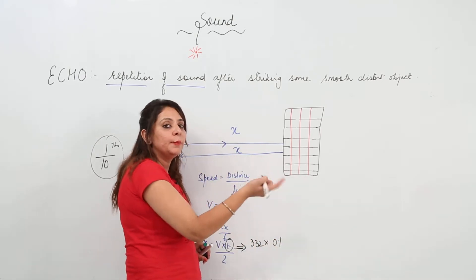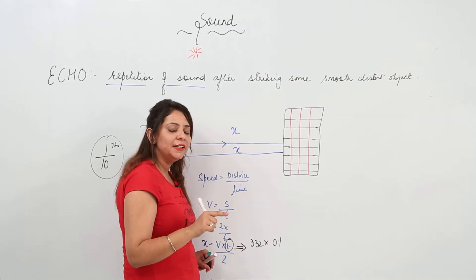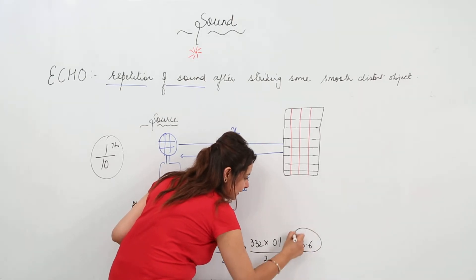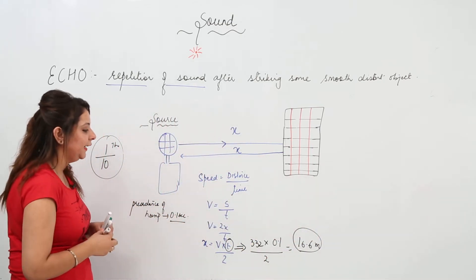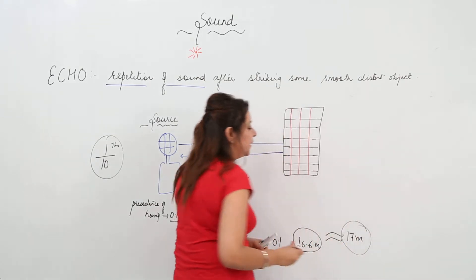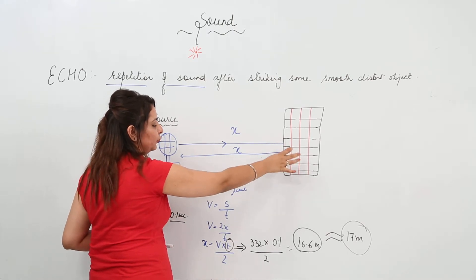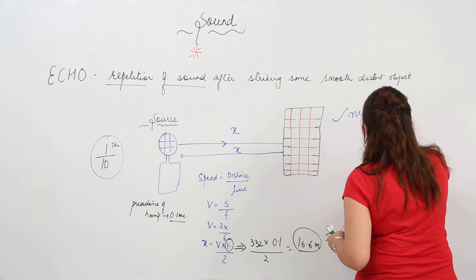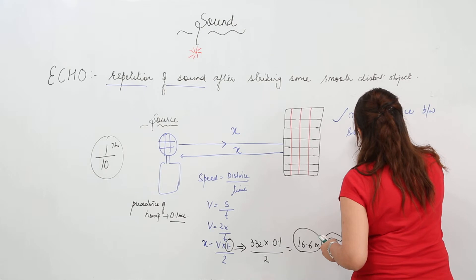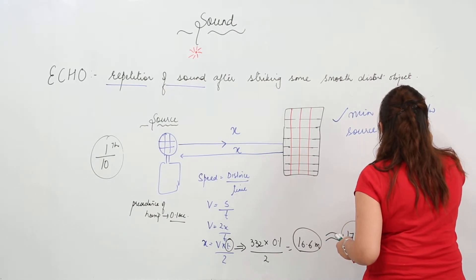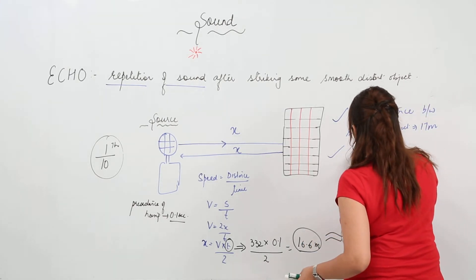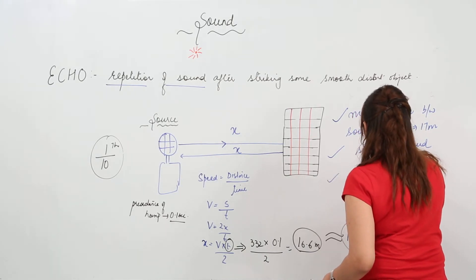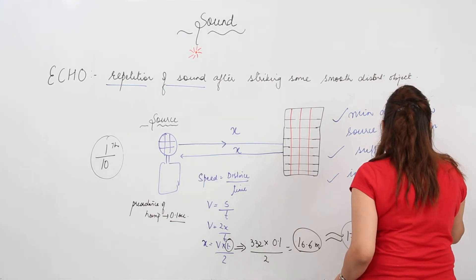Since the echo must arrive after 0.1 second of persistence of hearing, substituting into the formula gives 332 × 0.1 / 2 = 16.6 meters, approximately taken as 17 meters. So the minimum distance between the source of sound and the wall or any distant object should be 17 meters. Additionally, the sound should be sufficiently loud and the intensity of sound should be high.